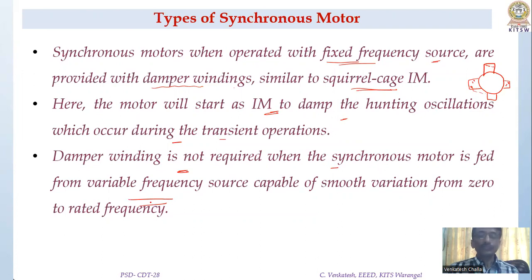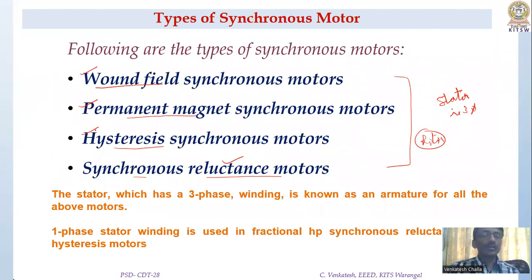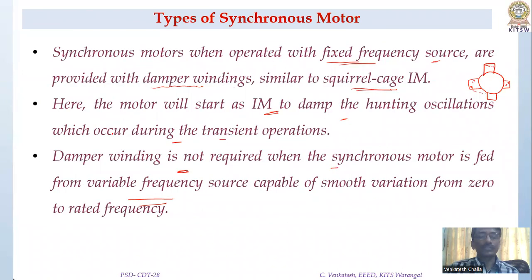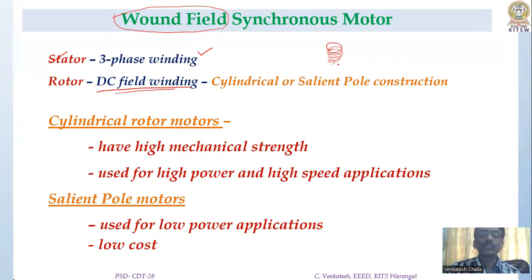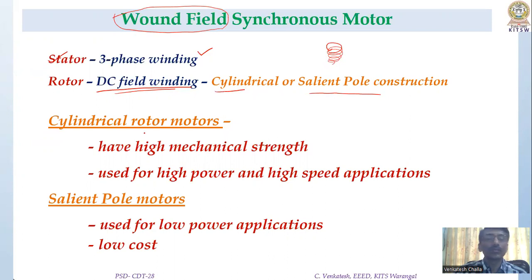In all three cases the stator is three-phase. For the wound field type of synchronous motor, the stator has a three-phase winding and the rotor has a DC field winding as an electromagnet — there will be coils wound on suitable field poles. The DC field winding is present in the rotor, and the rotor may be of cylindrical or salient pole type.